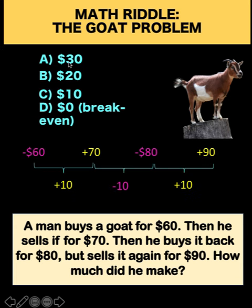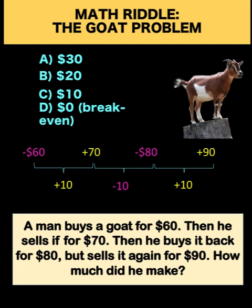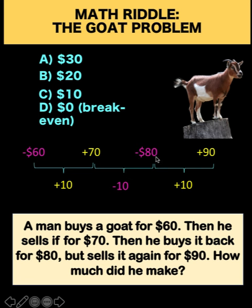For those who answered $30, this is what they're thinking: the man spent $60 to buy the goat for the first time, and at the end of all these transactions he pocketed $90. Therefore, from the capital of $60 to the final revenue of $90, there is a profit of $30. The problem with that approach is that when he sold the goat for $70, he had $70. But when he bought it back for $80, he had to spend an additional $10 from his own money. So in effect, he is not only spending $60 but also an additional $10 — a total of $70. And so $90 minus $70 gives a profit of $20, not $30.